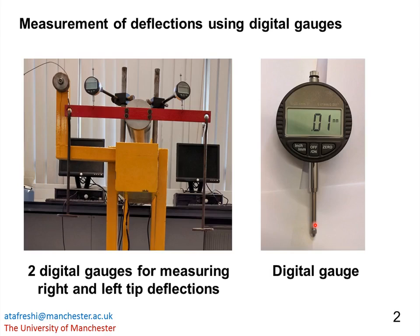The probe or plunger moves perpendicular to the components being tested by either retracting or extending from the indicator's body. They can measure in inches or in millimetres. This button is used to zero the gauge at the start of each test. Two digital gauges are located at the free end of the tube, on its left and right hand sides, and they measure the left and right tip deflections respectively.